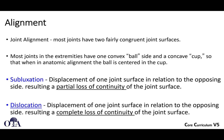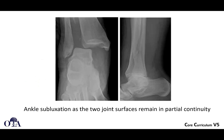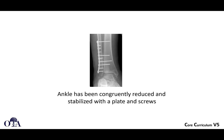Dislocated means there's a complete loss of continuity of the joint surface. Here's an example of ankle subluxation — you could argue there is still some continuity of the tibia and the talus, and the talus is not sitting all the way back. But this is not normal either. Here the ankle has been congruently reduced and stabilized with a plate and screws. The fibula was fixed, and there are multiple screws holding the fibula to the tibia to make sure the relationship is congruent.